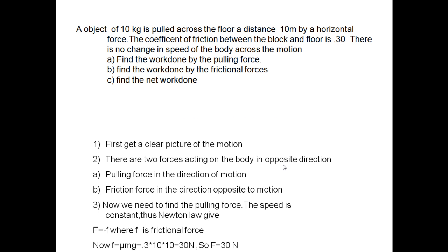The first question: an object of 10 kg is pulled across the floor a distance of 10 meters by a horizontal force. The coefficient of friction between the block and floor is 0.30. There is no change in speed of the body across the motion. Find the work done by the pulling force, the frictional force, and the net work done. The surface is rough due to the given coefficient of friction, and the force due to friction is important here.